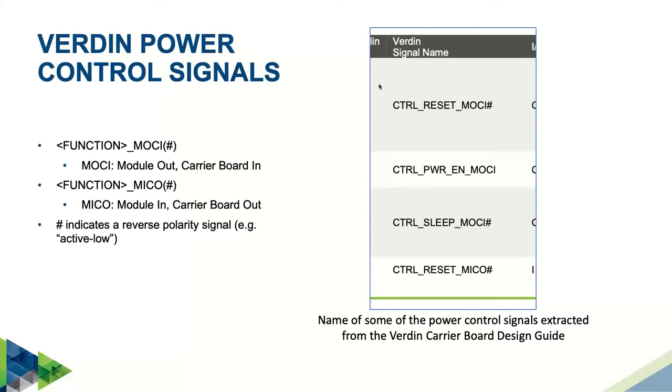Check out the last one, which is control reset MICO hash. It is an input to the module. This means it resets the module when asserted or shorted to ground as it's active low. I'll explain all the signals as we encounter them in the use case analysis.